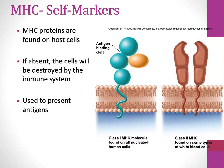MHC receptors tell our cells whether other cells are self or not. All cells in your body — except red blood cells — have some form of MHC markers on their surface. MHC class 1 has one transmembrane domain and is found on all nucleated human cells. Red blood cells eject their nucleus after producing hemoglobin, so they lose the ability to produce MHCs and are the only cells in your body that don't have them.